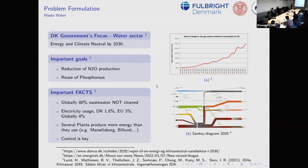A few important facts: 80% of wastewater globally is not cleaned. Electricity usage is an optimization parameter — it's 1.8% of Denmark's electricity, larger in the EU and globally even larger. The reason it is 1.8% today is because of prior efforts in control and optimization.